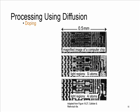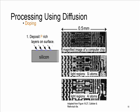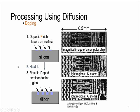Another application of diffusion in processing is doping. Here, silicon with phosphorus for n-type semiconductor has been doped. In this process, first phosphorus-rich layers on the surface of silicon are deposited. Then it is heated, and finally the phosphorus has been doped into the semiconductor regions. The image shows a computer chip in which silicon and aluminum atoms have been doped.